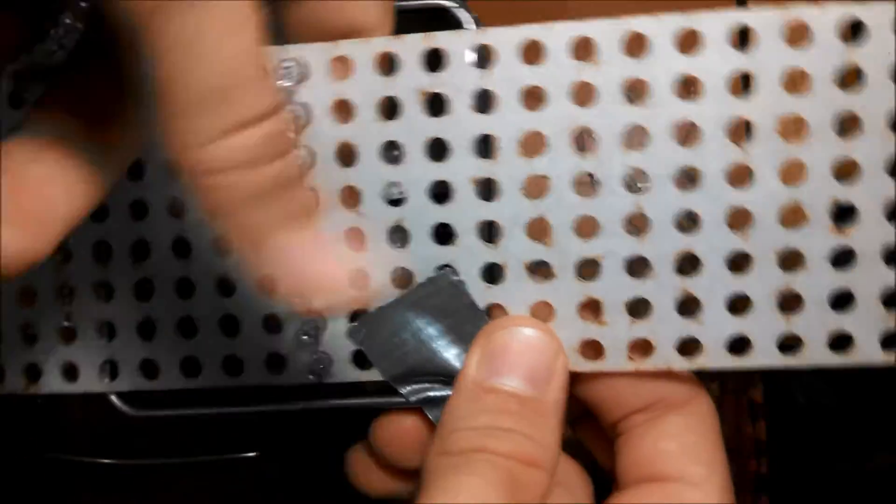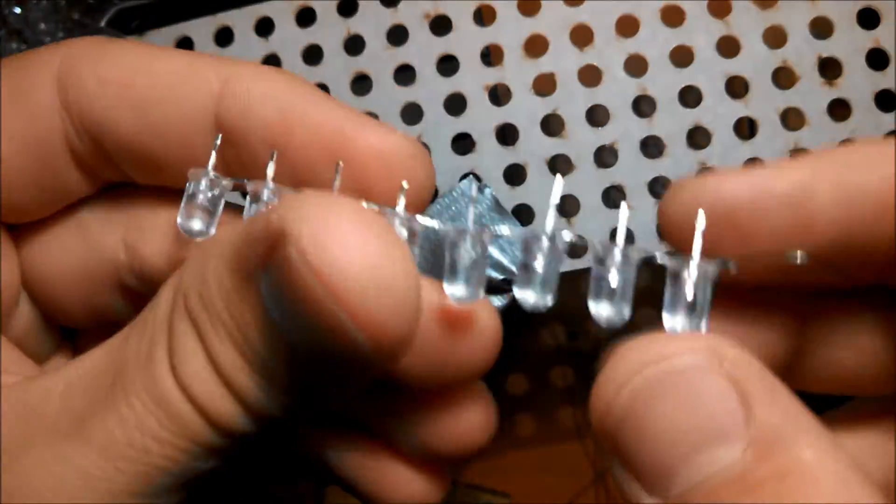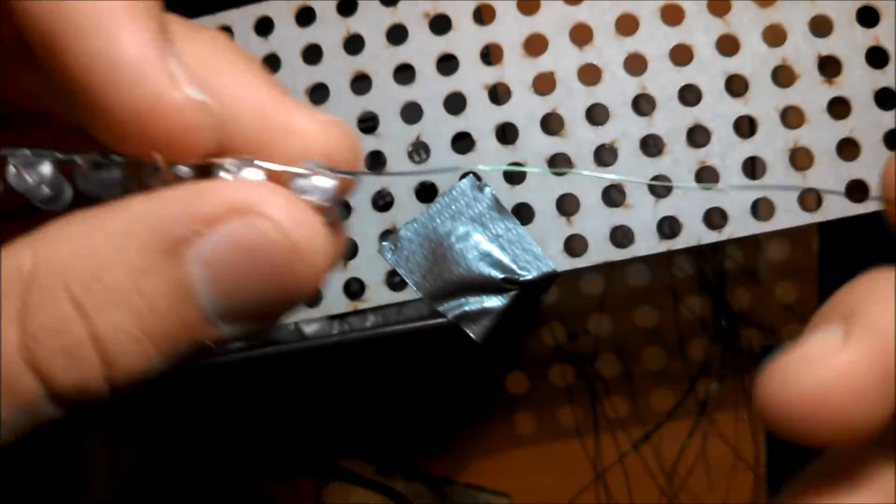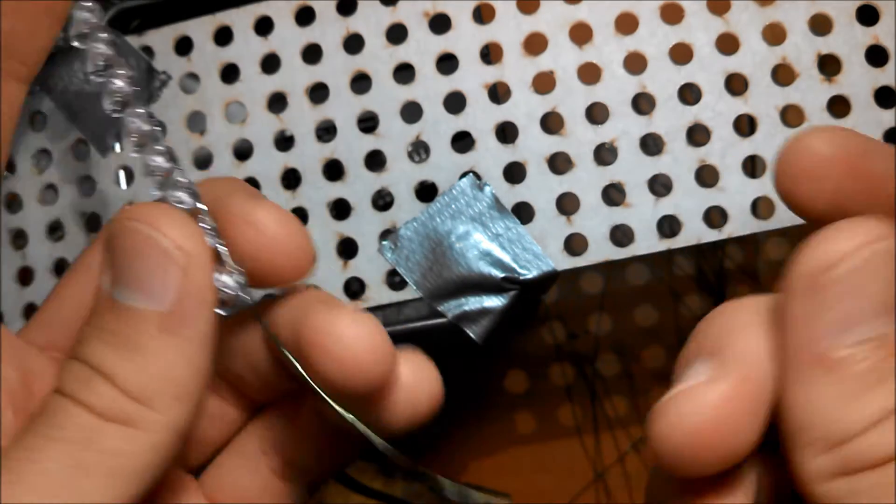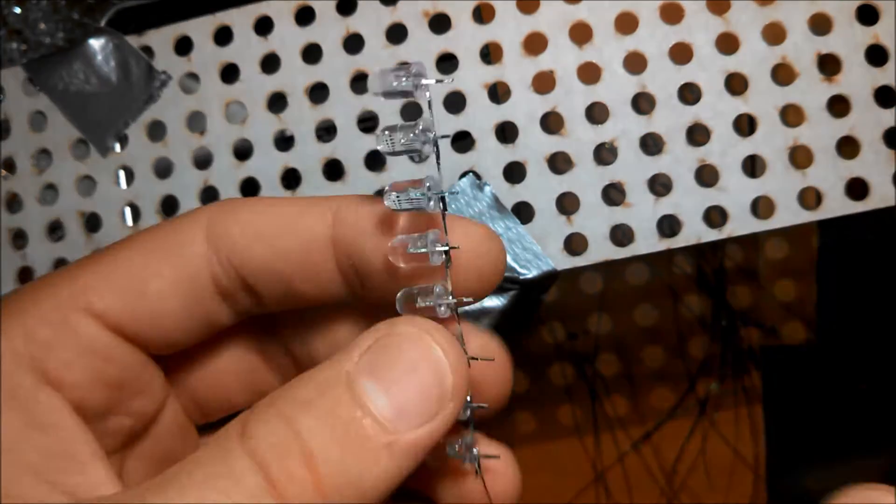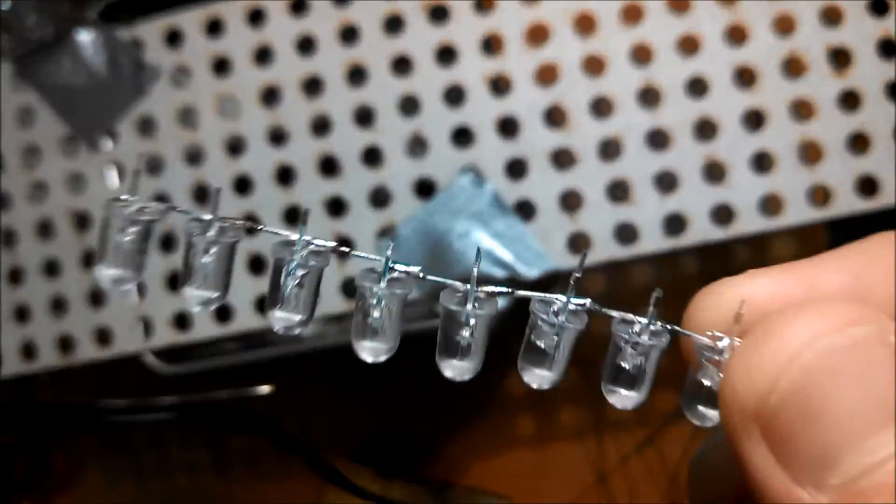Now, just solder this tinned wire to the column here. Here's what the end product should look like. You have 8 LEDs here, and you have a three-inch strip of enameled wire coming off the back. Make either 32 or 40 of these, depending on what design you're working on.